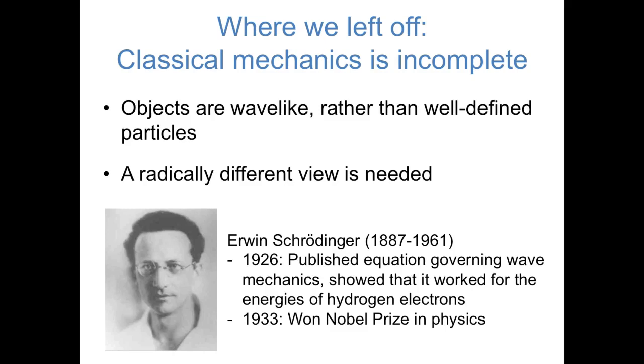Schrödinger developed the equation that's now called the Schrödinger equation, and showed that that equation can predict the energy levels of a hydrogen atom. So this was the first major success of quantum mechanics.